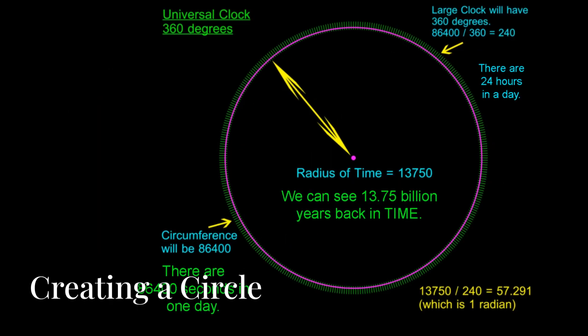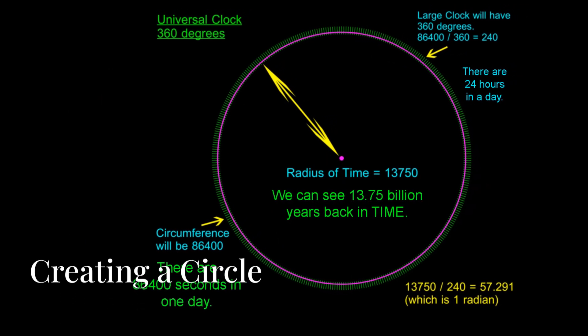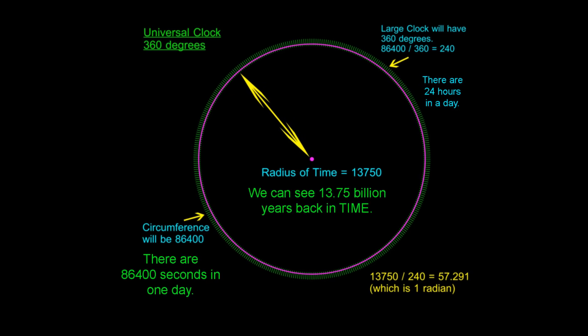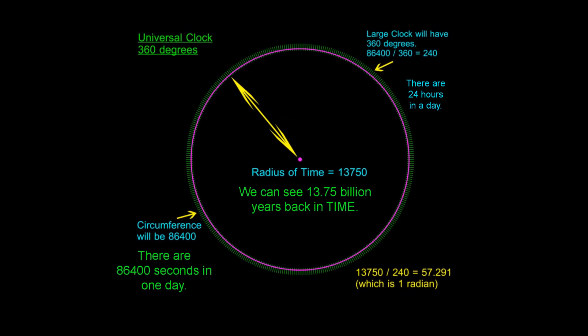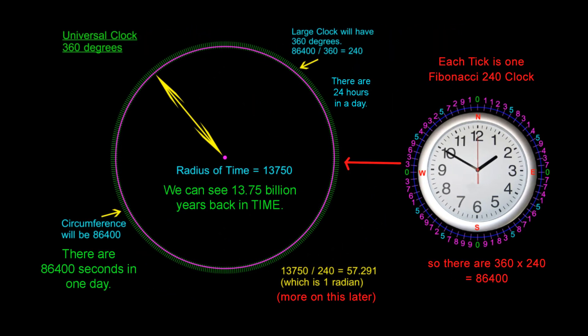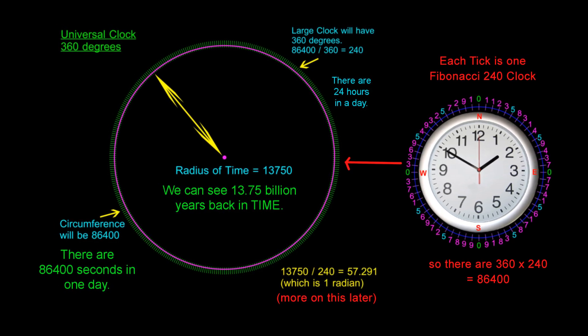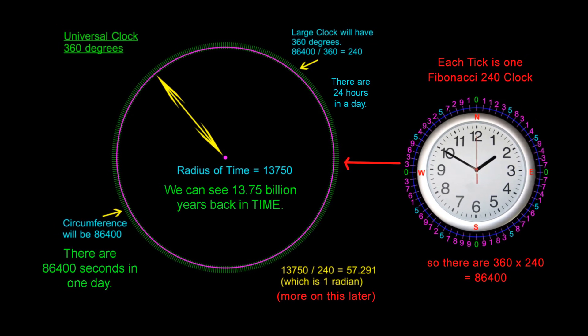Now, look at this. If I create a circle with 360 ticks on its circumference like a compass with 360 degrees and I assign a value of 240 to each one of those ticks. Imagine that each one of those ticks is one Fibonacci clock.